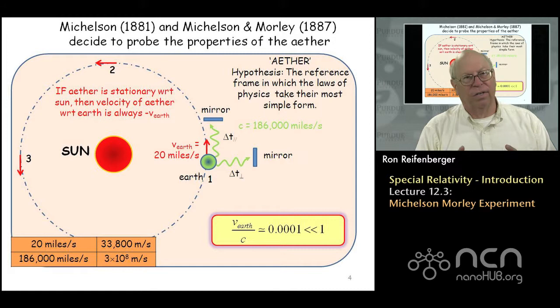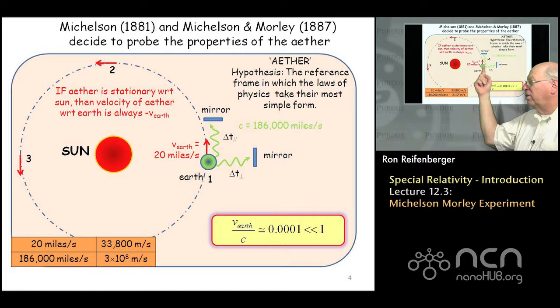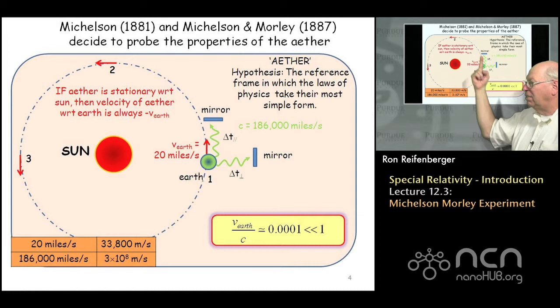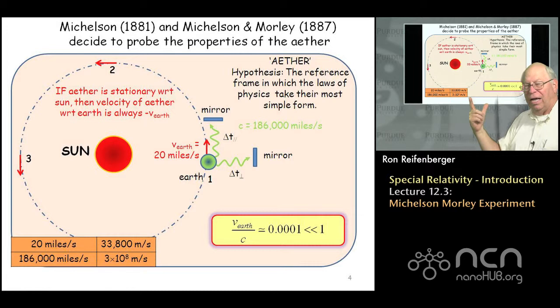The idea is very similar to swimming in a river. Here we have the earth orbiting around the sun. As the earth orbits, its velocity with respect to an ether that might be stationary with respect to the sun is going to rotate in different directions. If the Galilean transform of velocities is applicable, you should measure different speeds for light depending on whether the light moves parallel to this drift velocity of the earth or perpendicular to it.